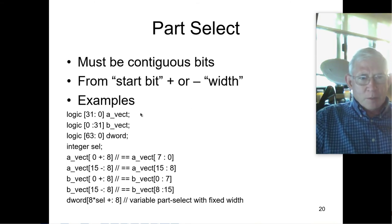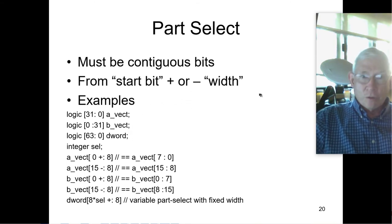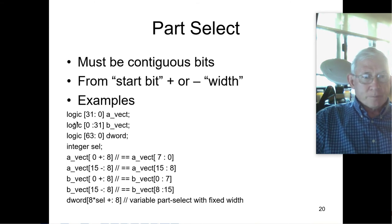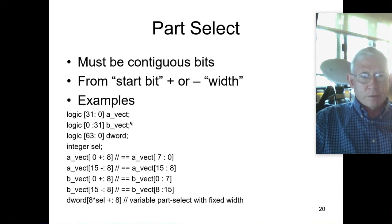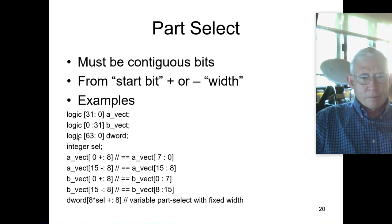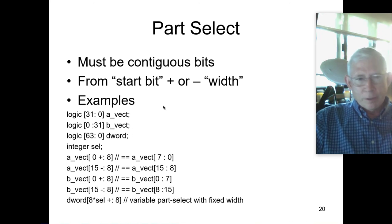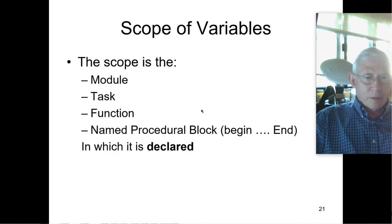Part select examples: they must be continuous bits, going from a start bit plus or minus a width. I personally think it's better just to specify the bits directly, like 3 to 0. You can use the start bit plus or minus a width, but I just don't recommend it — I think it's very easy to get confused about this.